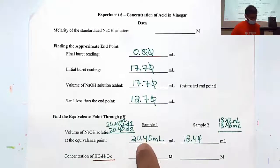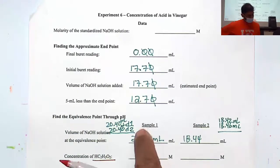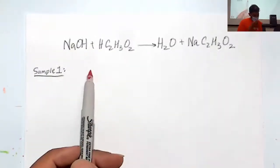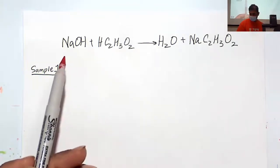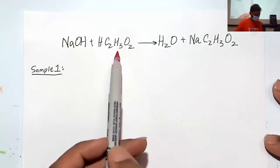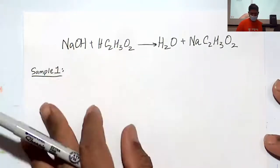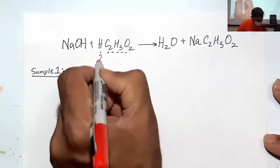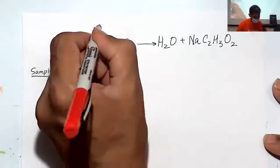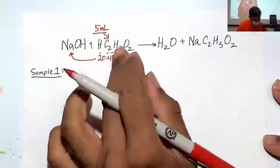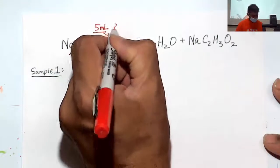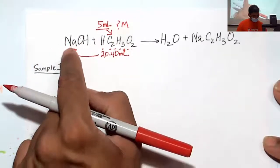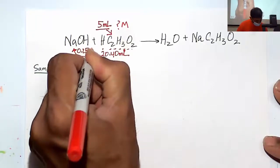We will calculate the concentration of acetic acid in our vinegar sample. NaOH was our titrant that went into the burette, and the acetic acid was in the flask. We took 5 mL of the vinegar, 50 mL of water, and two drops of indicator. It changed color once it reached the equivalence point.